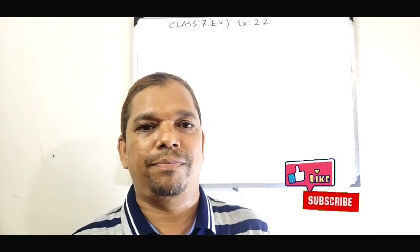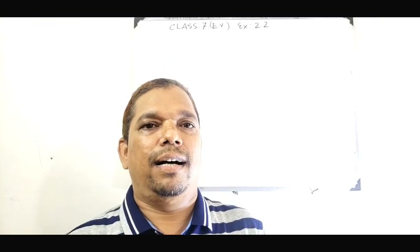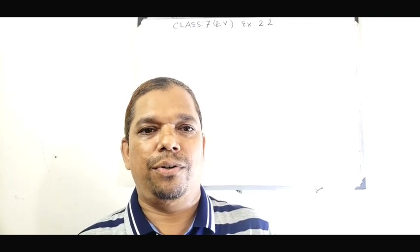Hi everybody, I hope you are very well. Today's class is only for English version class 7. The name of the chapter is Profit and Loss, that means chapter 2.2. Today's class 7 is a requested class. Welcome to Math Tech. Let's go start for chapter 2.2, especially for English version class 7 students.